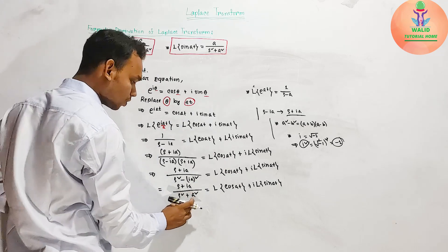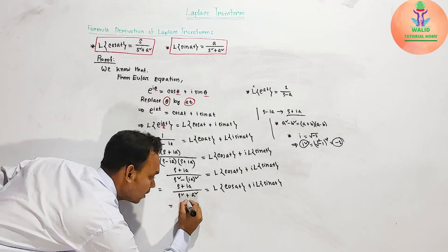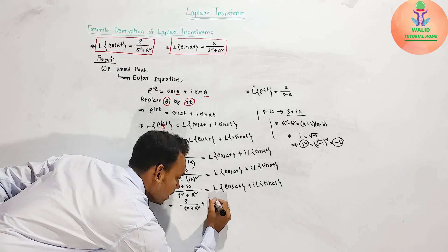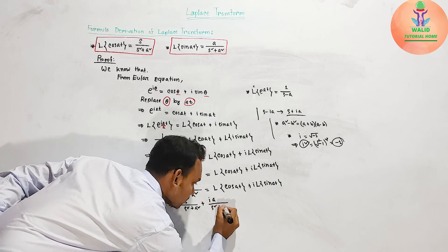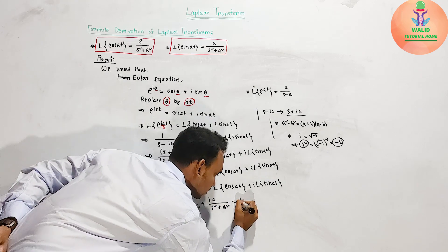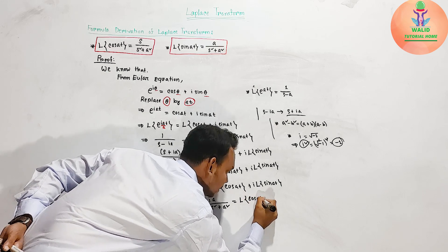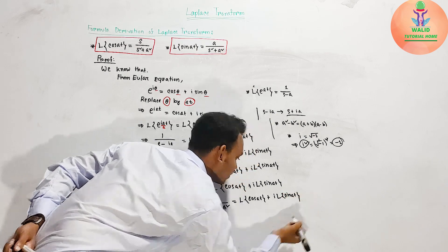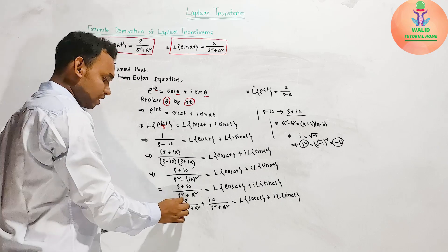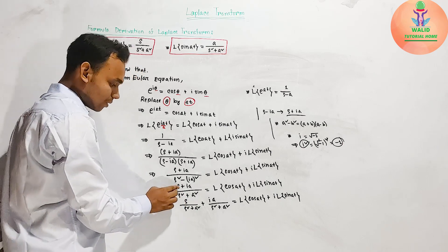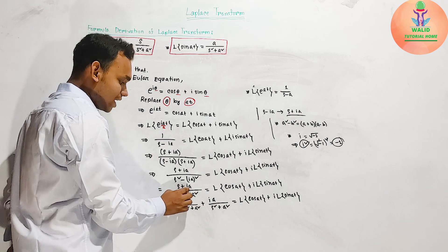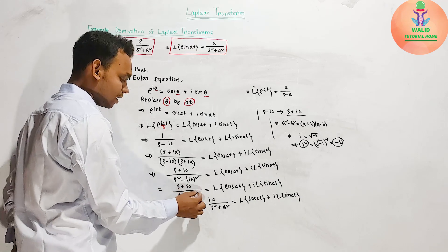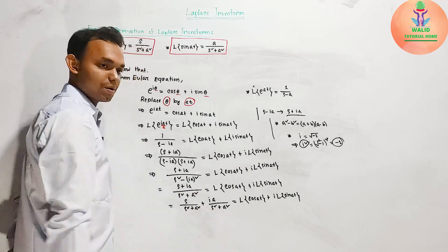Now separating this expression, we can write it as s divided by (s² plus a²) plus i times a divided by (s² plus a²). This equals the right-hand side: Laplace transform of cos(at) plus i times Laplace transform of sin(at). So we can write these two parts separately.